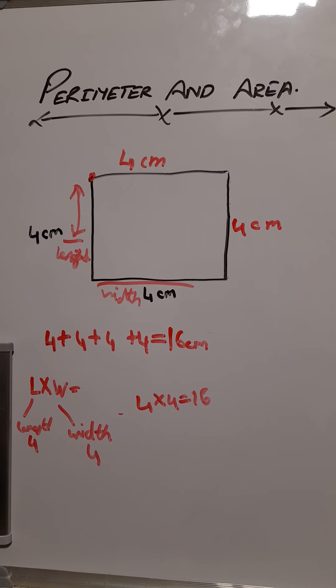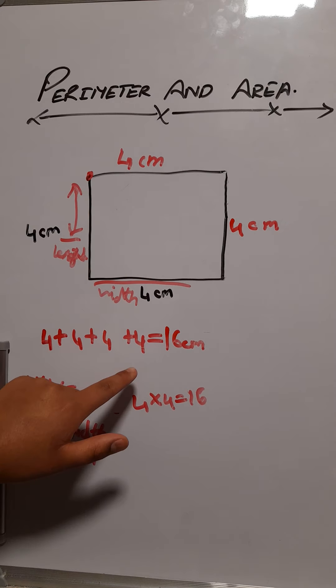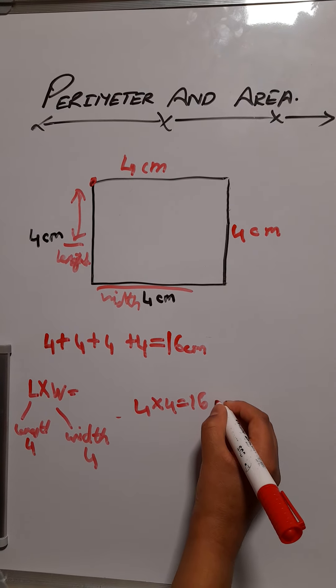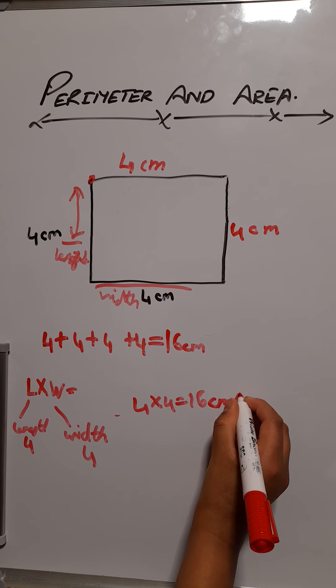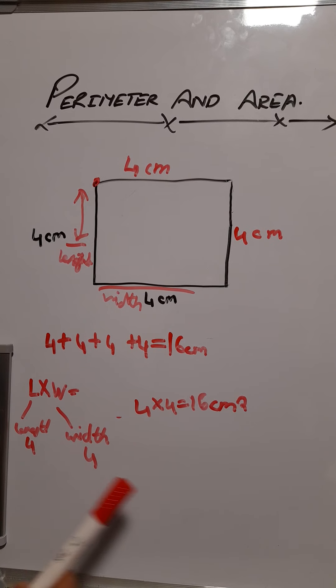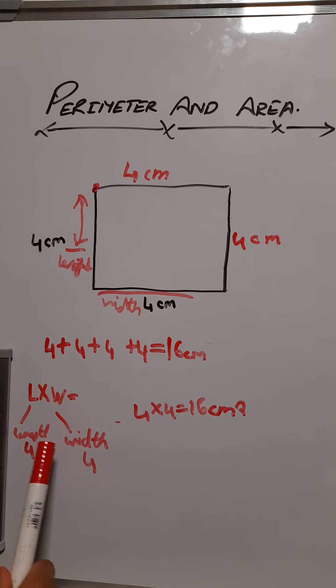As we do this, our answer is 16cm, and we also have to put centimeters squared this time. Squared means the units of measurement of the area, and that's also because you're timesing.